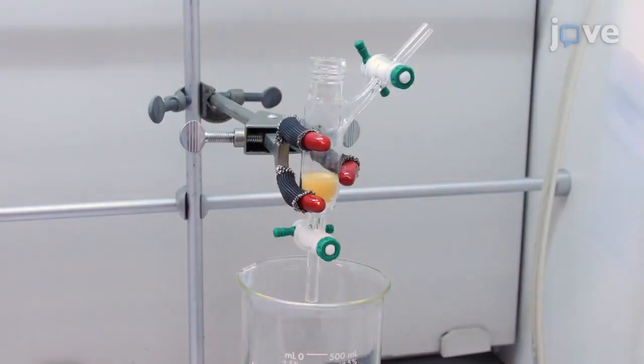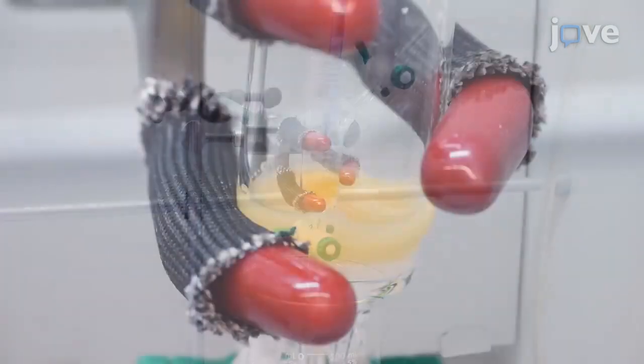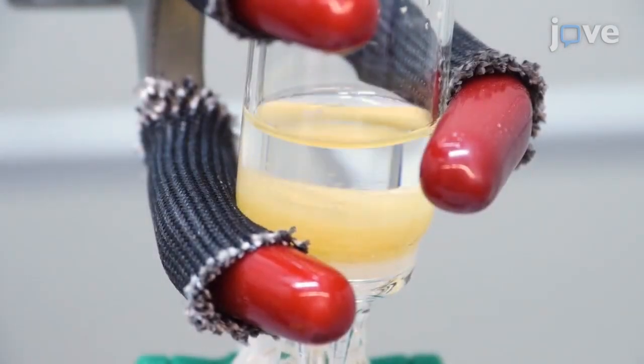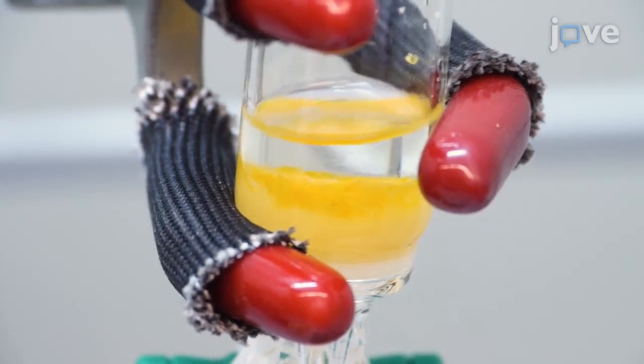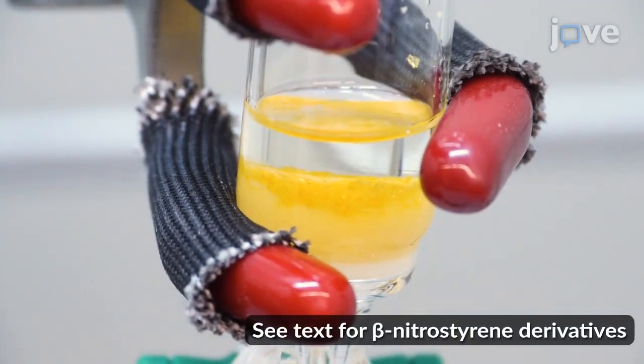Next, in a well-ventilated fume hood, add 1.48 milliliters of triethylamine, 10 milliliters of anhydrous toluene, and 0.637 grams of beta-nitrostyrene to the dry furfurylamine-bearing resin.